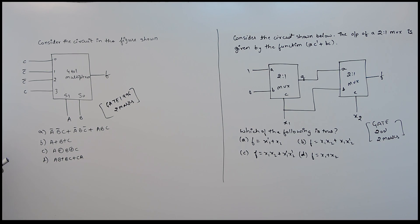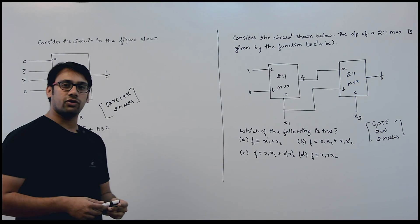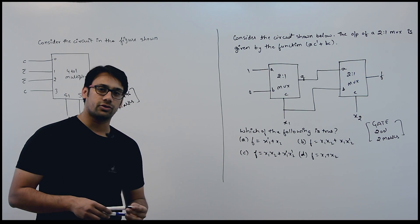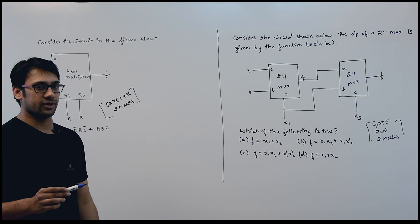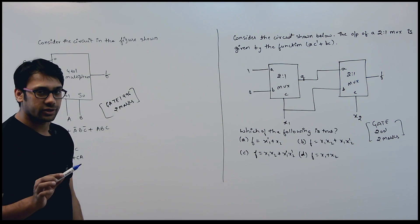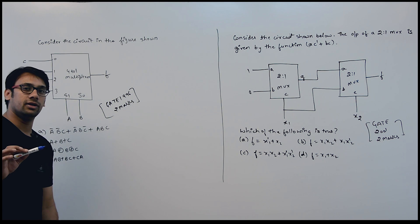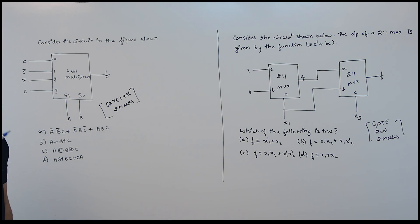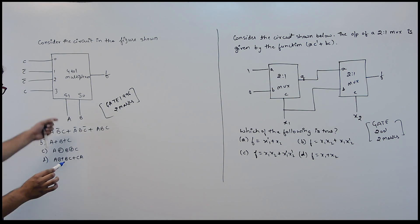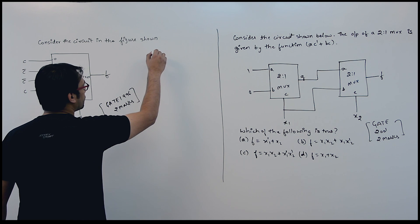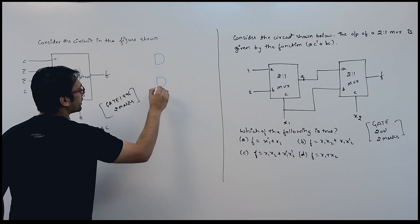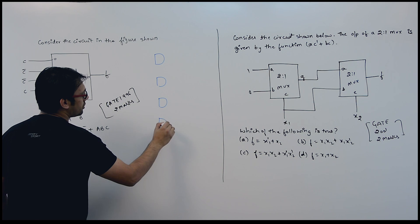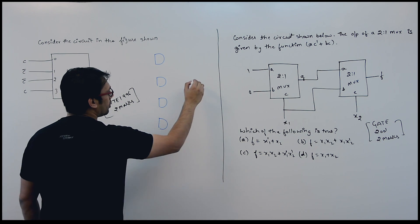This is a 4×1 multiplexer. We have already studied what a 4×1 multiplexer is, and I have already shown you its diagram. Let me draw the diagram again and accordingly show you what the equation of the function f is. This is the 4×1 multiplexer diagram. We are going to use four AND gates and one OR gate.